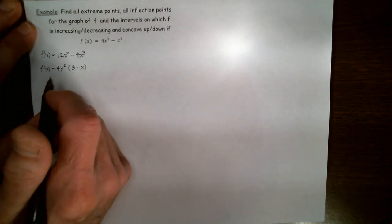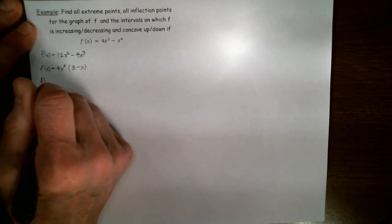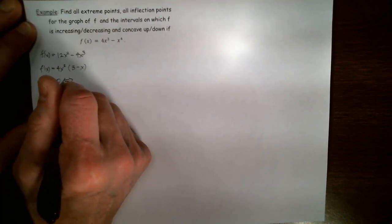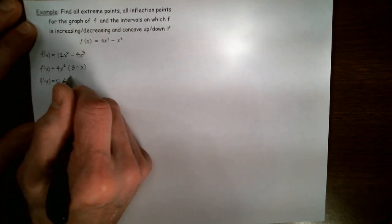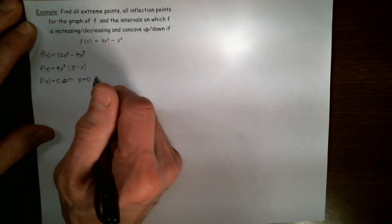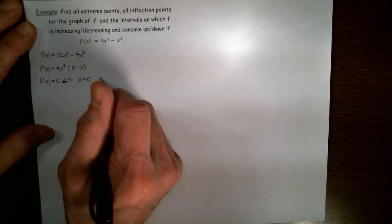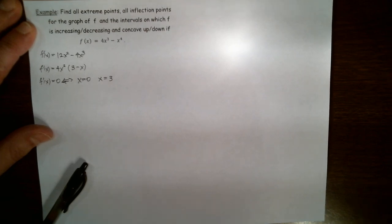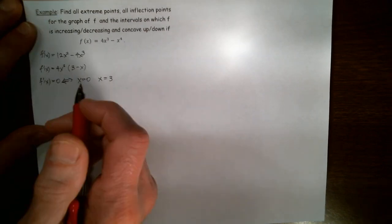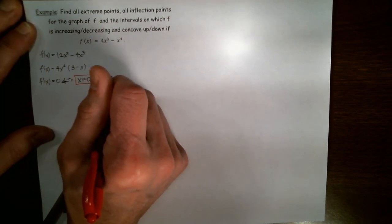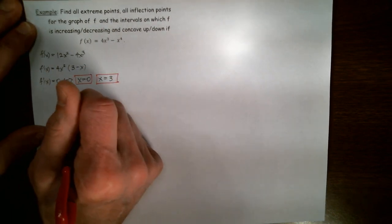Setting the first derivative equal to 0, we find that either 4x² = 0, which means x = 0, or 3 - x = 0, which means x = 3. Thus, these two values x = 0 and x = 3 are our critical numbers. We'll put those two numbers in boxes and call them the critical numbers.